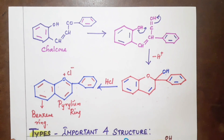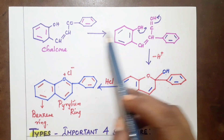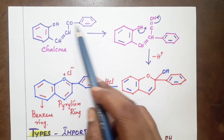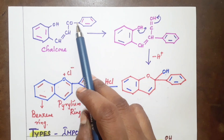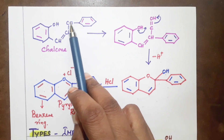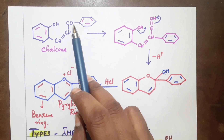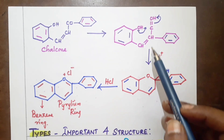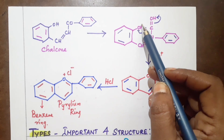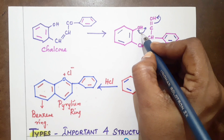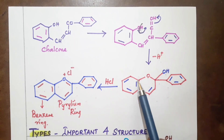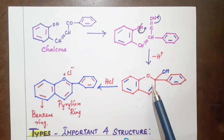At this step, the chalcone is rearranged to form an OH group. The chain becomes CH double bond CH, single bond C double bond O. The benzene ring will join CH. In the second step, we replace H — minus H plus — to proceed to the next intermediate.